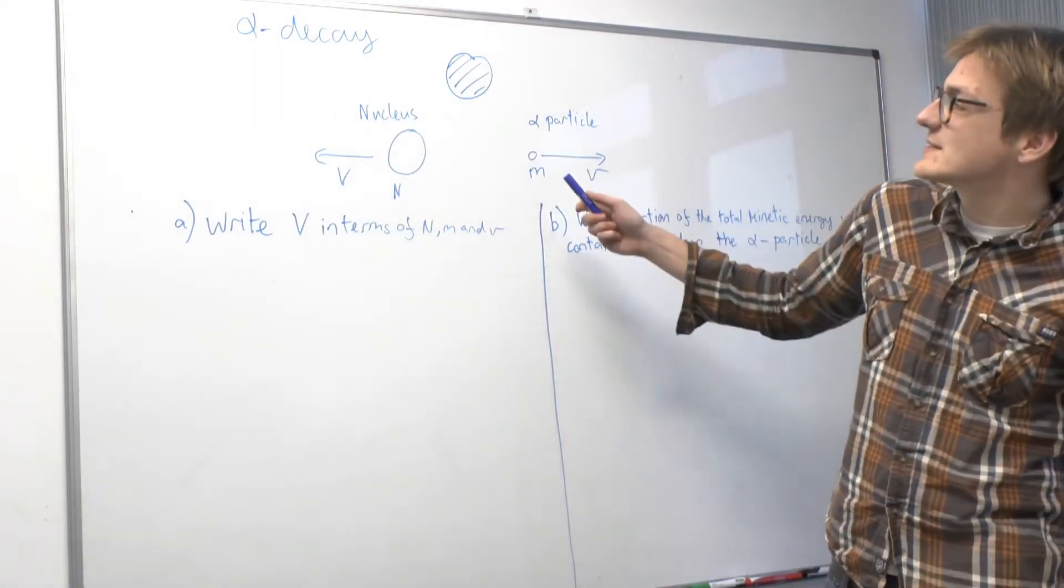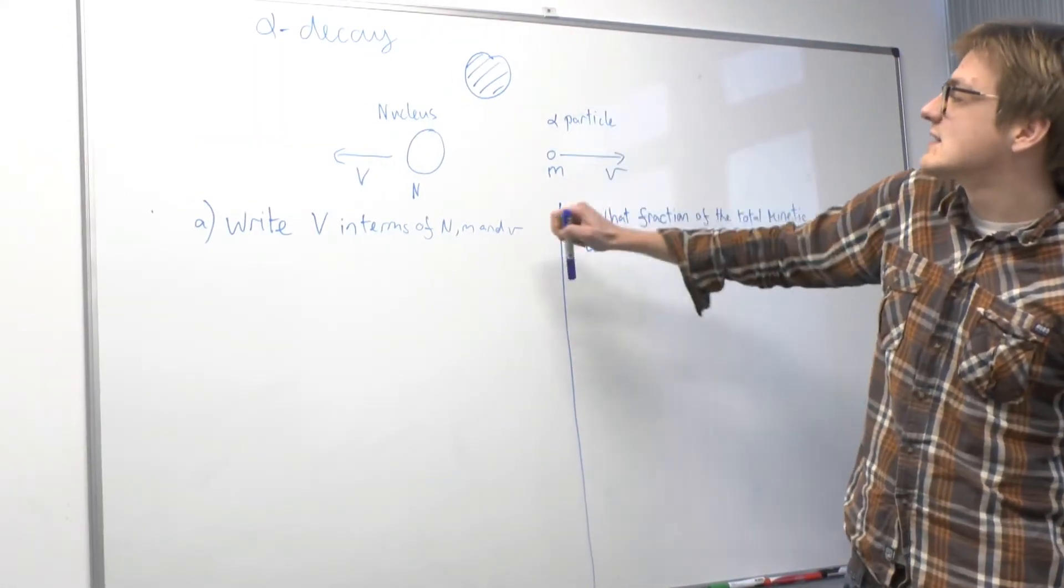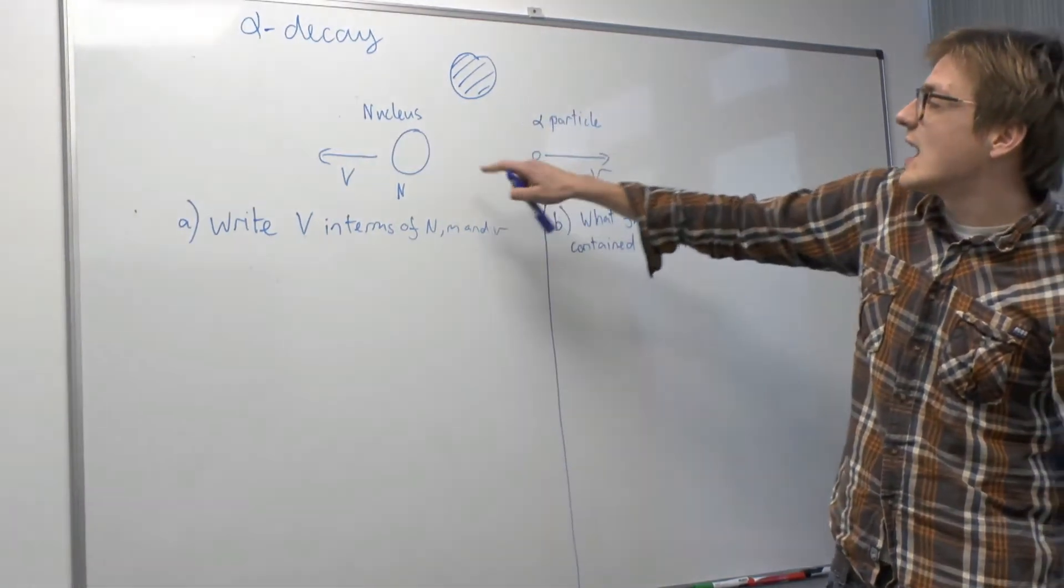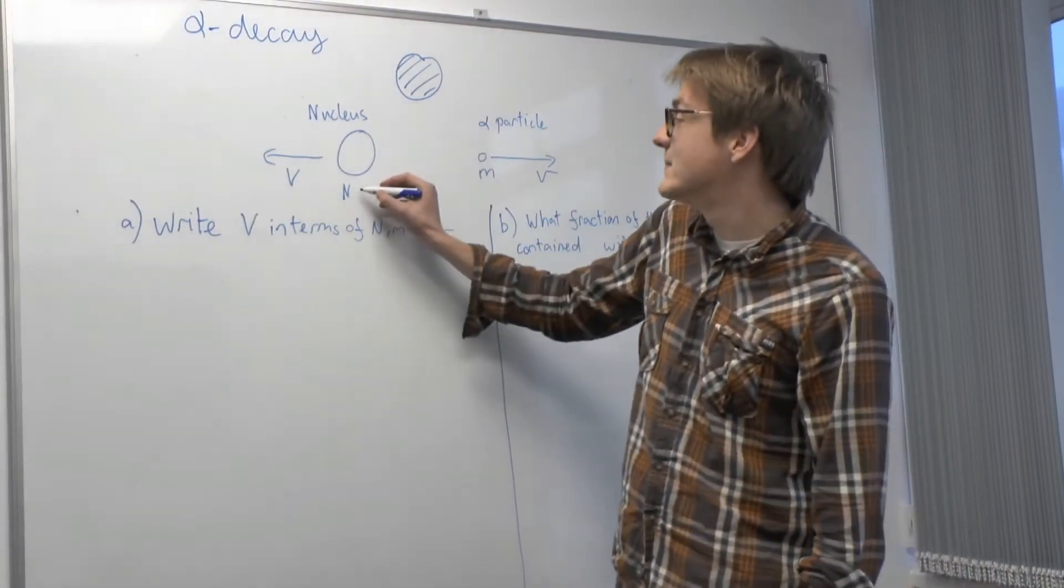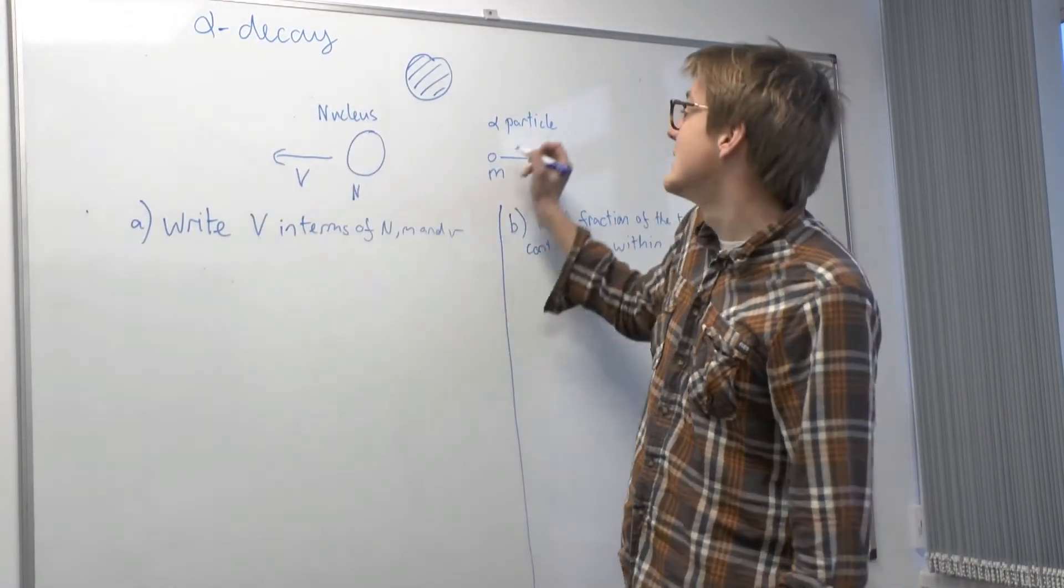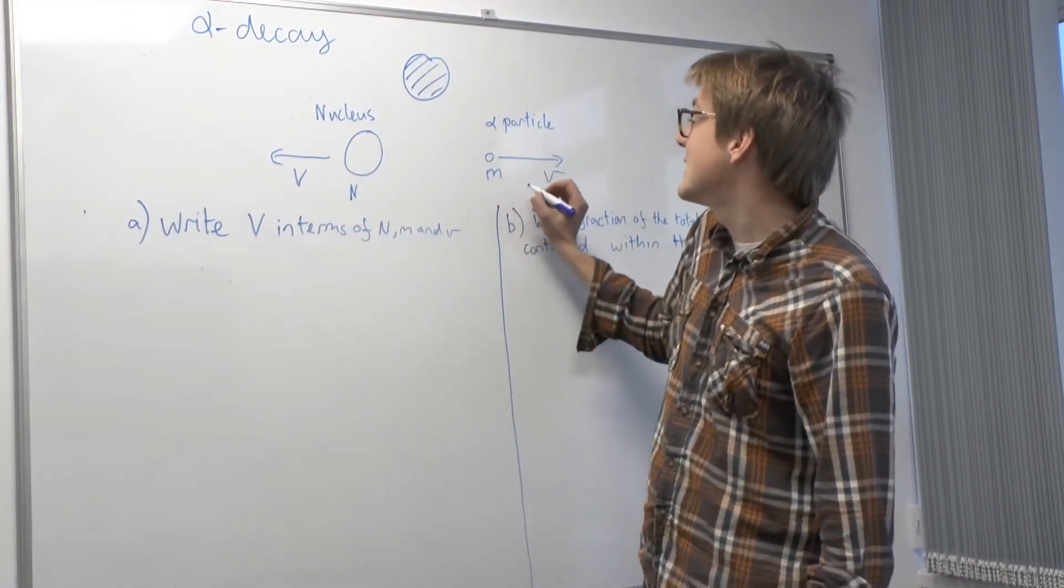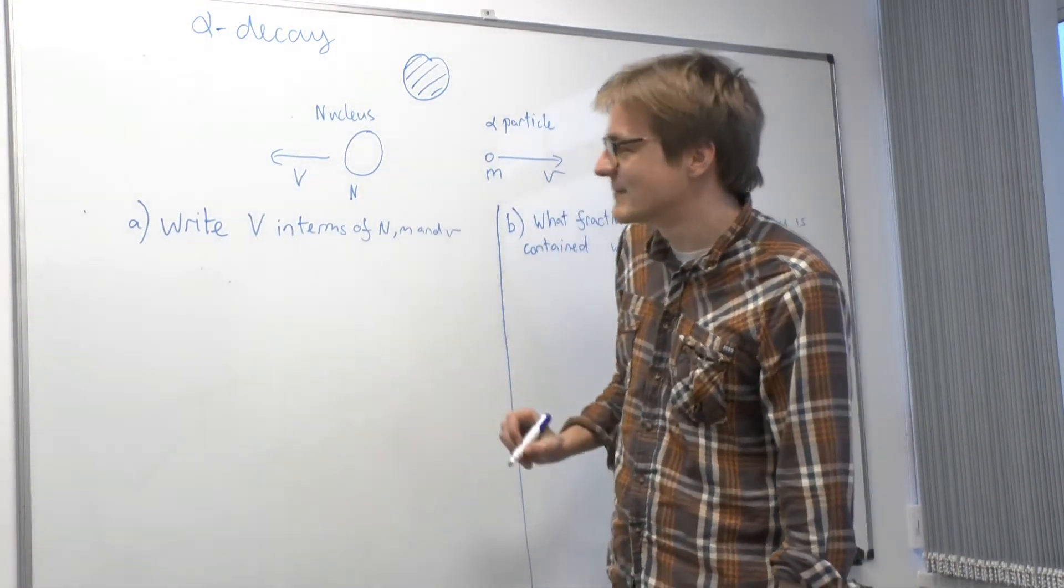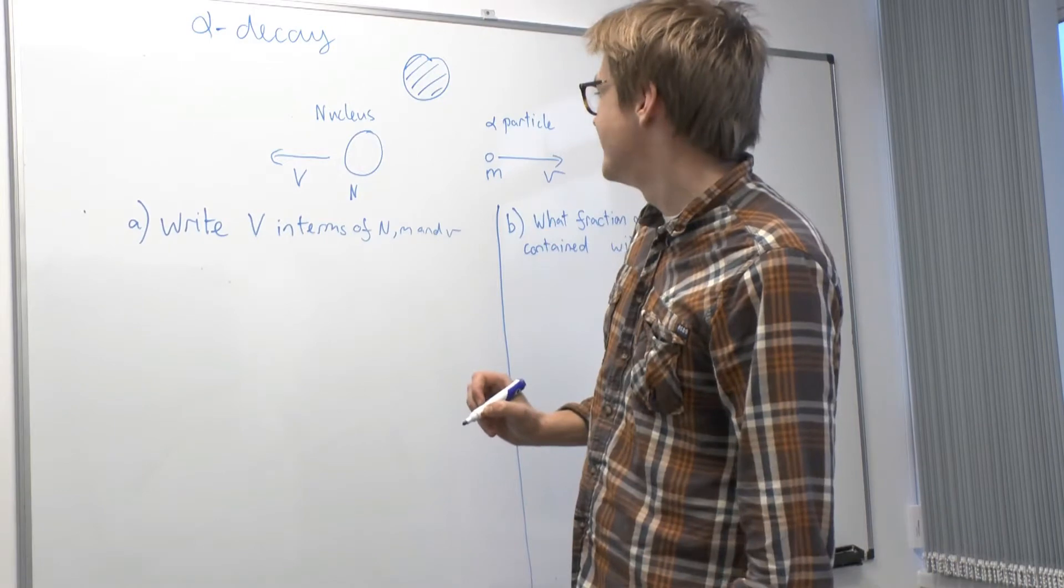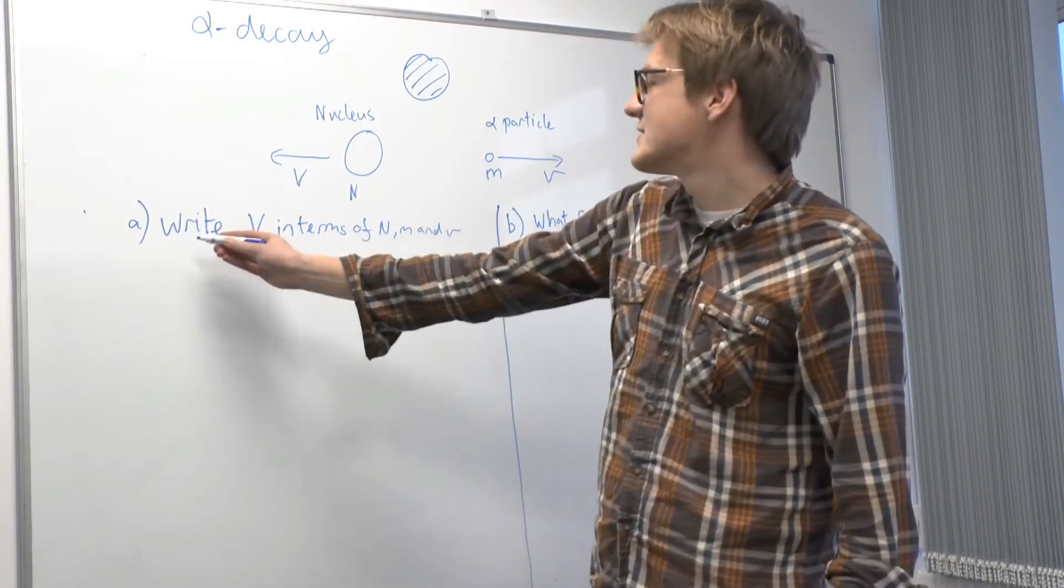We're looking at alpha decay, so we have a nucleus that is occurring as an alpha particle and the remainder of the nucleus. Now the nucleus has mass big M and velocity big V, the alpha particle has mass little m and velocity little v. So let's answer this question.